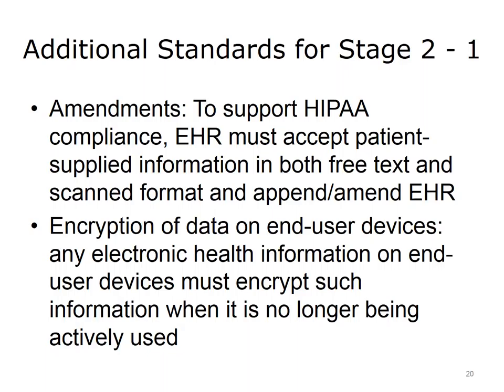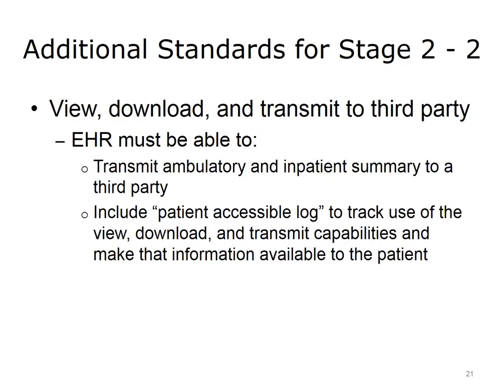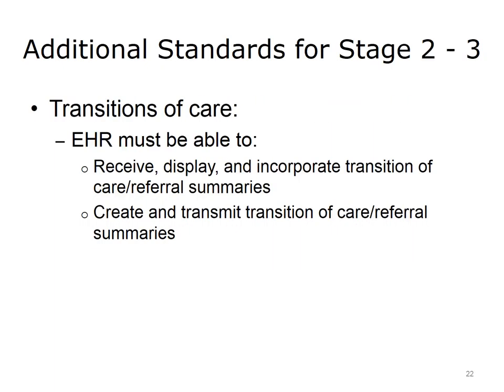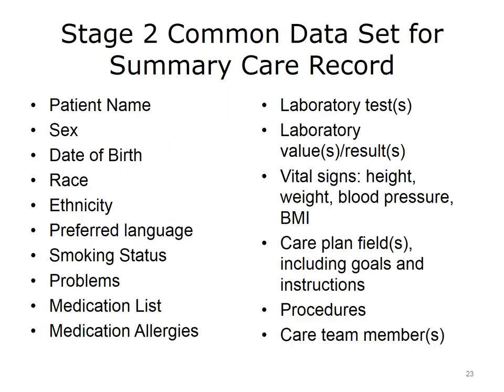There were additional standards for Stage 2. One concerned amendments to the EHR required to support HIPAA compliance, with the patient being able to supply information in free text or scanned format that could be appended to the EHR. Another was the need for encryption of data on end-user devices such as computers and mobile devices. For the process of viewing, downloading, and transmitting to a third party, the EHR had to transmit either an ambulatory or inpatient summary and had to include a log tracking those actions, with the patient required to have access to that log. Finally, for transitions of care, there was a requirement for the ability to receive, display, and incorporate summaries, as well as to create and transmit them.